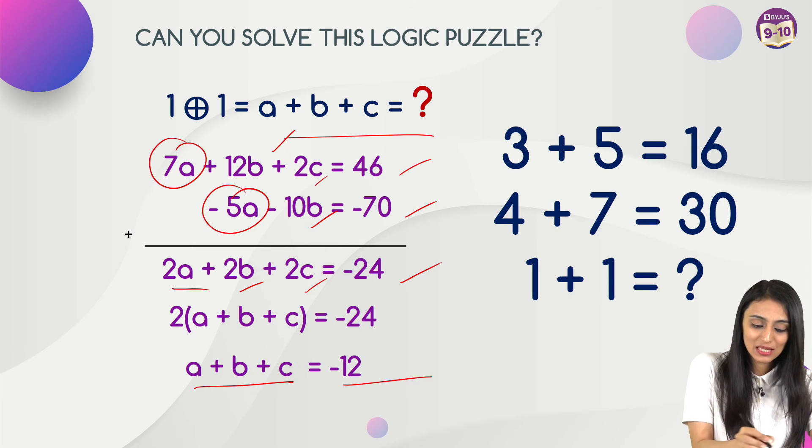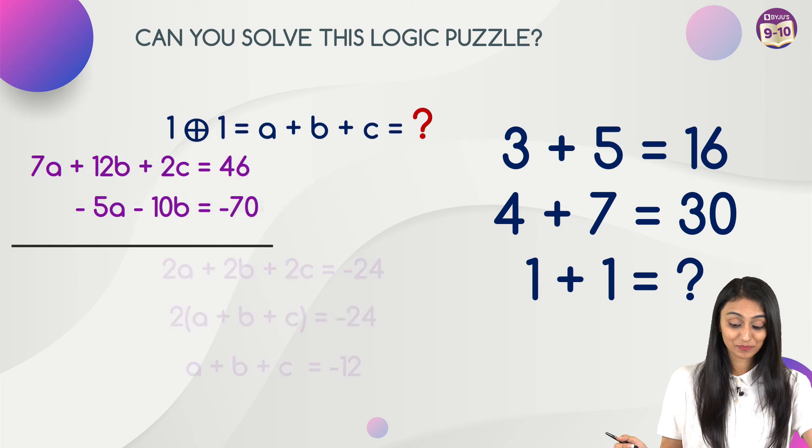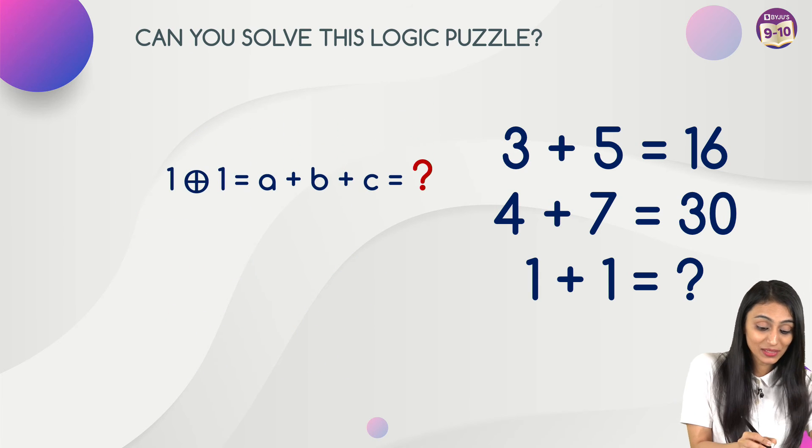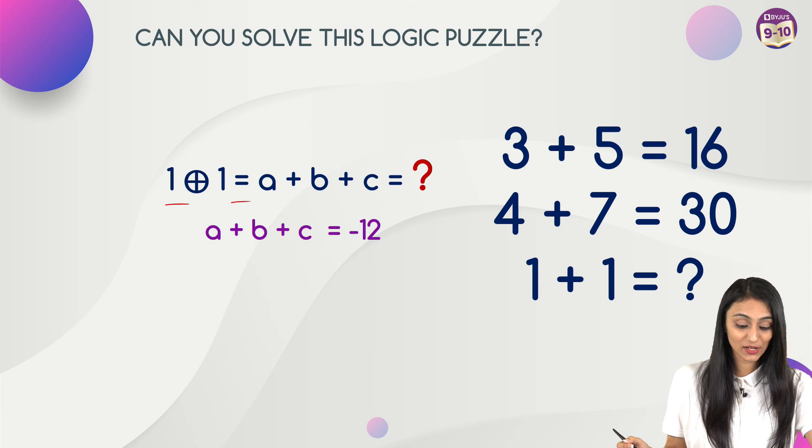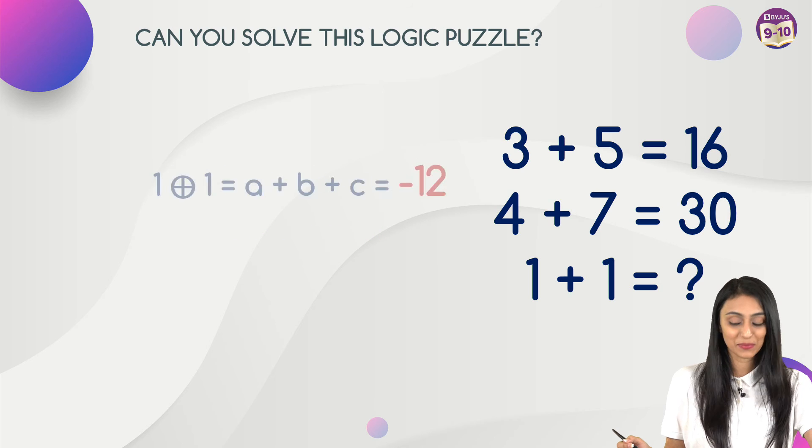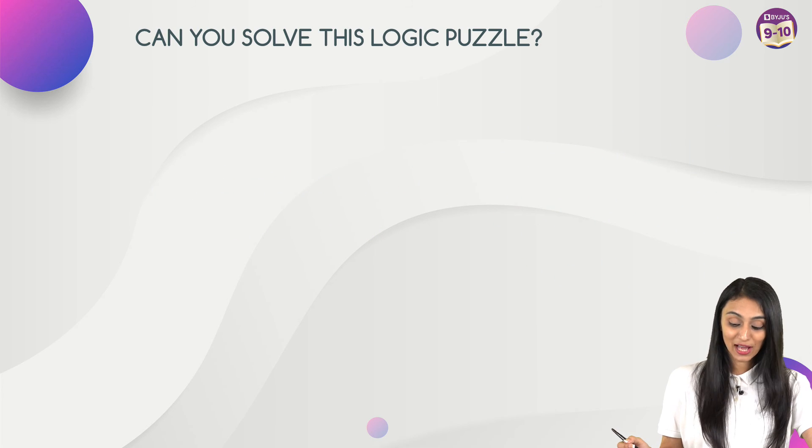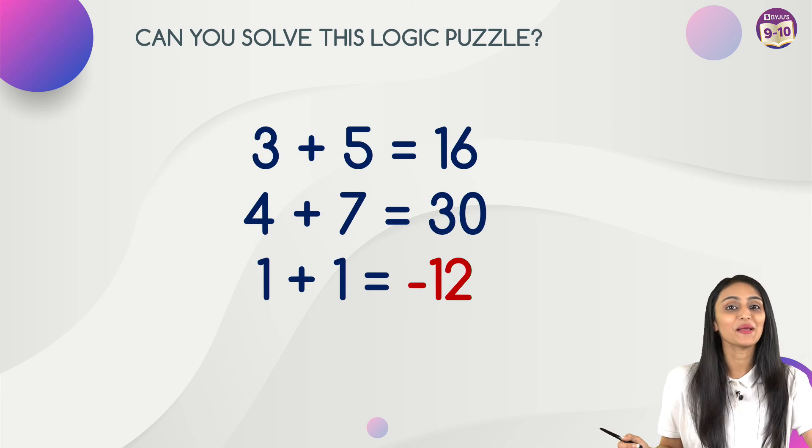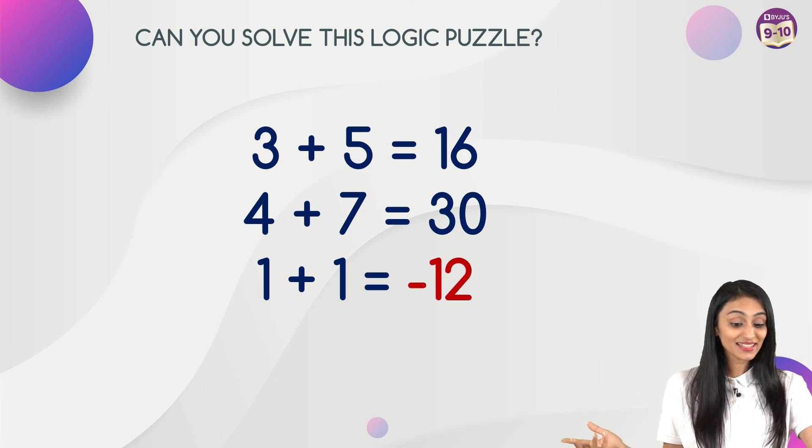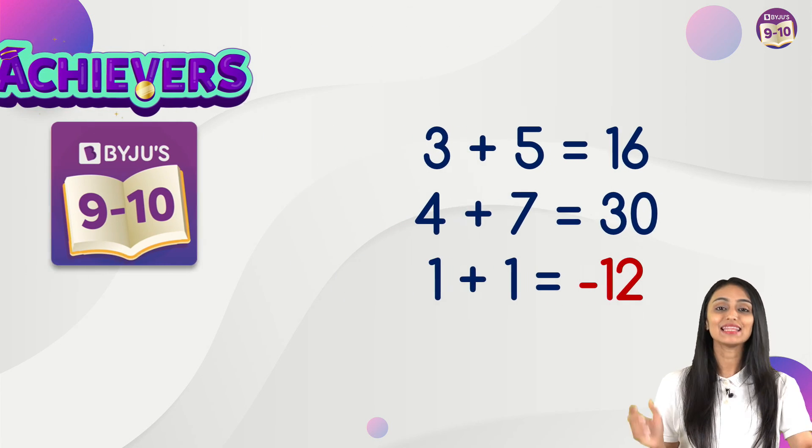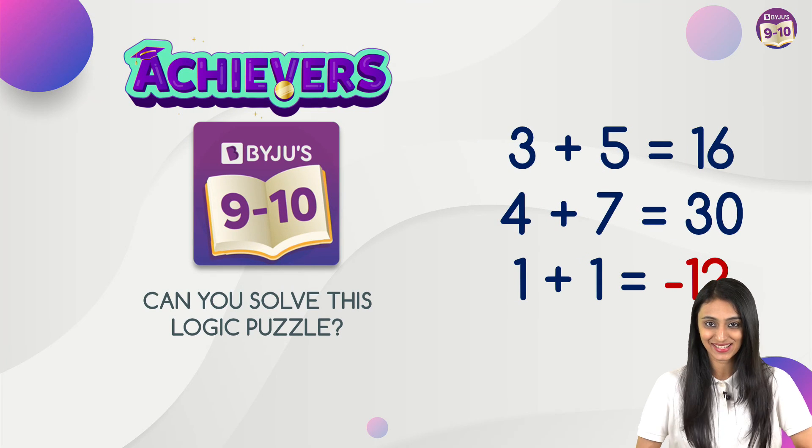And what a plus b plus c was? That was basically we assumed this with 1 and 1 using this operator. So I can say if a plus b plus c is minus 12, that means the value of 1 plus 1 over here is going to be minus 12. So that's the final answer for this. Now do leave a comment for me in the comment section, how you like this puzzle?